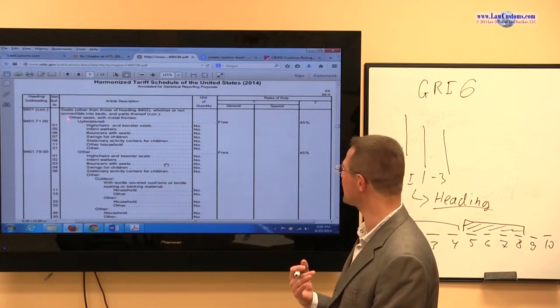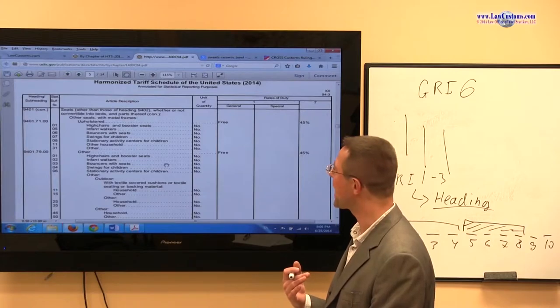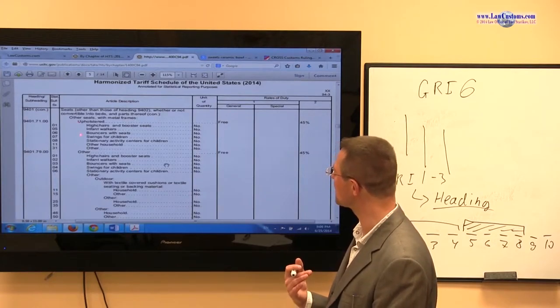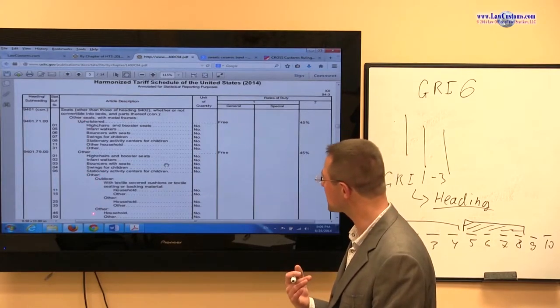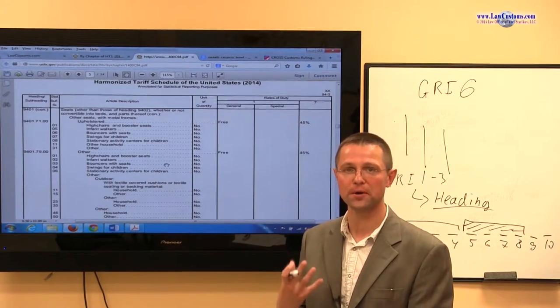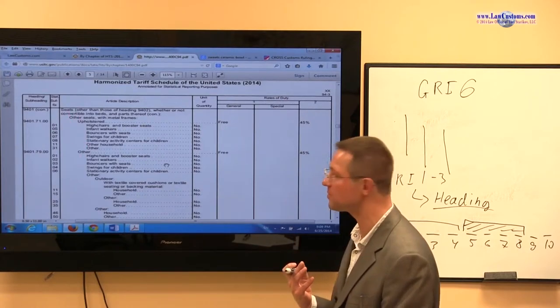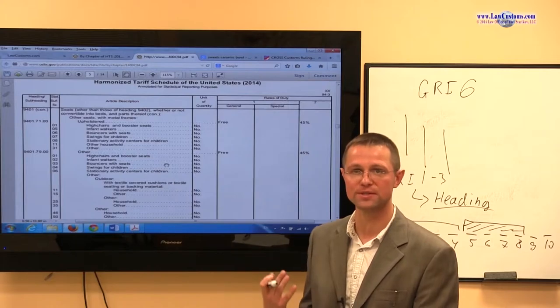However, once we get to the subheading, we start to deal with hierarchy. And because we have hierarchy here, this hierarchy must adhere to the rules of hierarchy. We must do the first level, then the second level, then the third level in the order received.